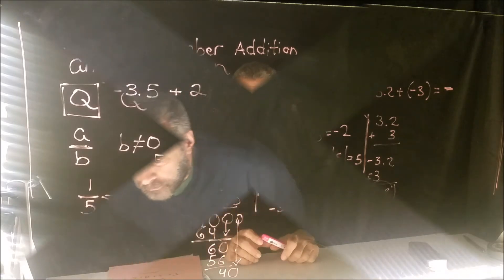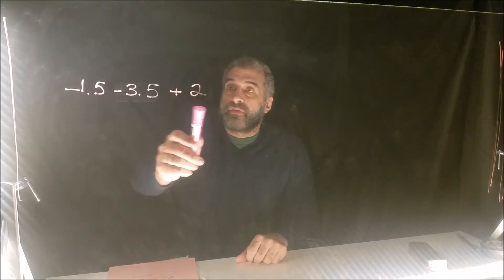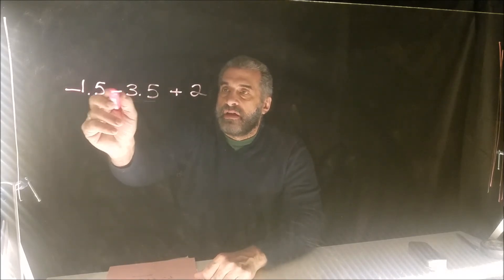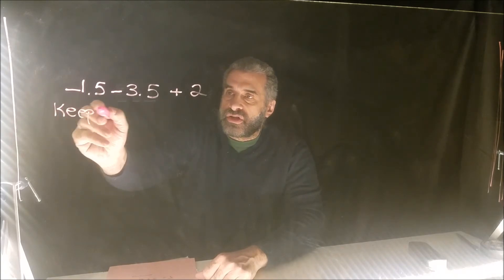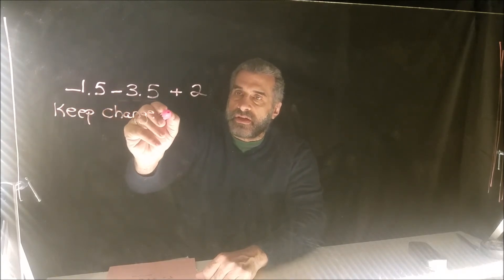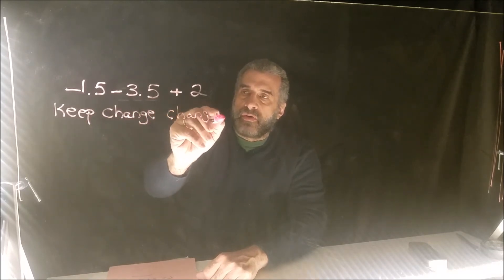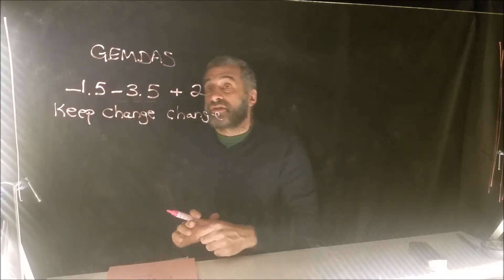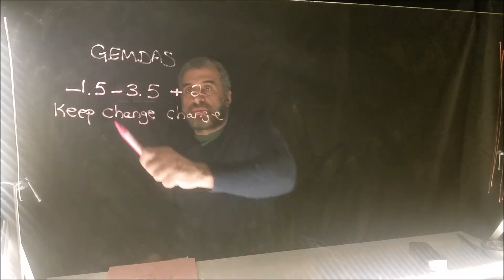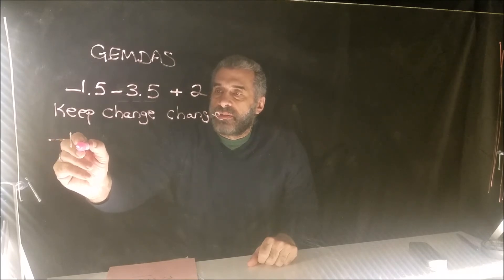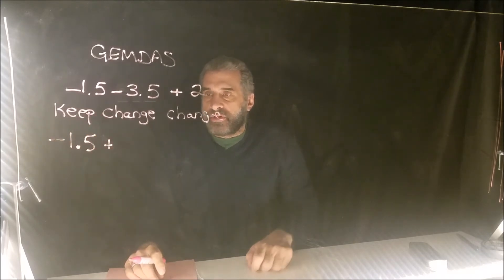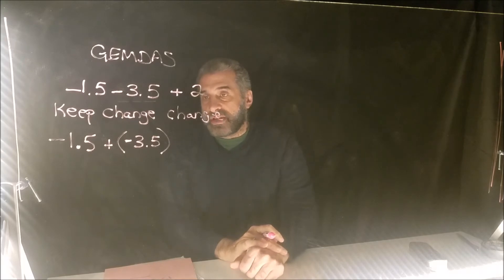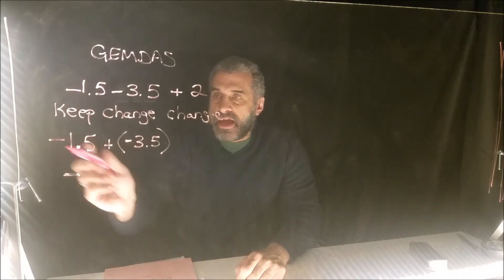Now let's look at examples with rational numbers — they can be decimals or fractions. We have three numbers and two operations. Remember keep-change-change for subtraction, just like with integers. Subtraction came first, so we apply it: keep negative 1.5, change subtraction to addition, change 3.5 to negative 3.5.